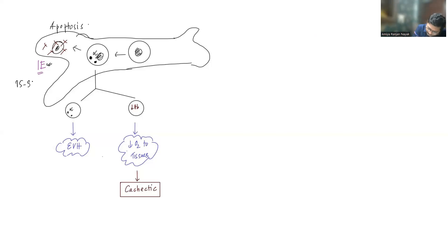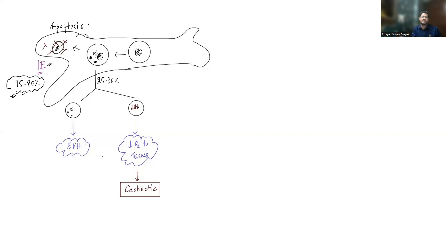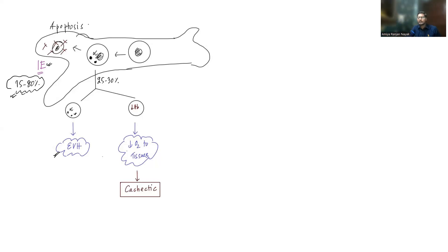Around 75 to 80 percent of erythroblasts produced will get destroyed by ineffective erythropoiesis. The remaining 25 to 30 percent that escape can come into the circulation, but they still carry alpha chain inclusions. These inclusions are perceived as abnormal by the spleen, causing extravascular hemolysis. All these erythrocytes will have reduced hemoglobin because there is no beta globin — they only have non-functional alpha inclusions.